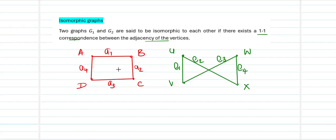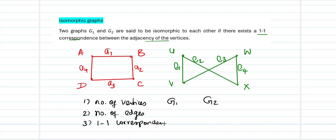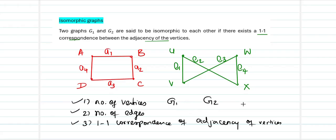So what are the conditions we need to check? Number one, we need to check for the number of vertices — if G1 and G2 have the same number of vertices. Number two, if they have the same number of edges. Next, is there a one-to-one correspondence of adjacency of vertices in G1 and G2? If these three things are true, then we say that G1 is isomorphic to G2.